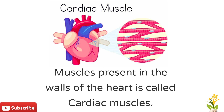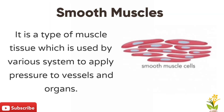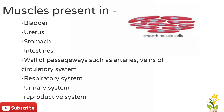Smooth muscles are the type of muscles used by various systems to apply pressure to vessels and organs. Smooth muscles are present in the bladder, uterus, stomach, intestines, walls of passageways such as arteries and veins of the circulatory system, respiratory system, urinary system, and reproductive system.